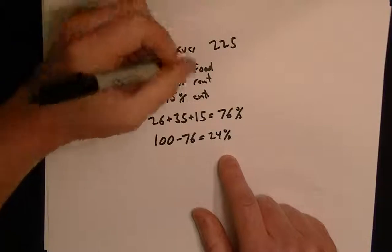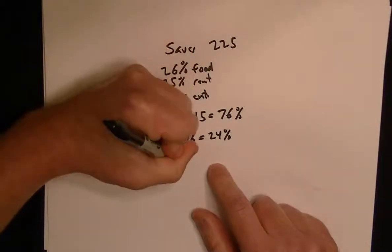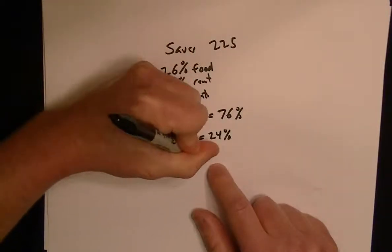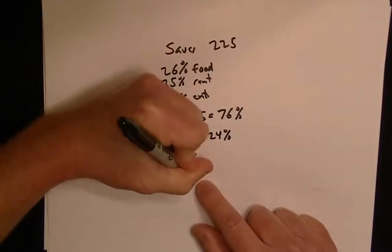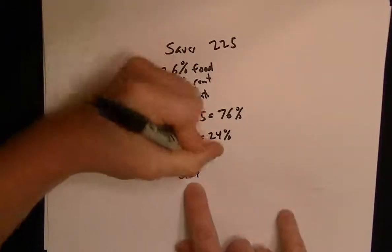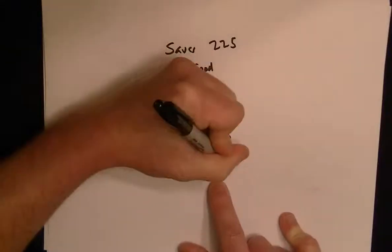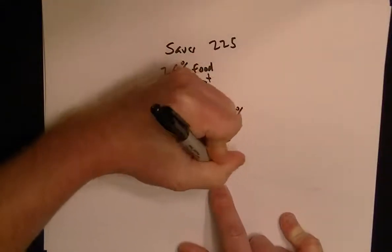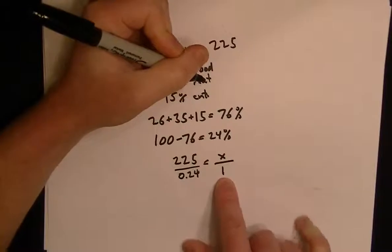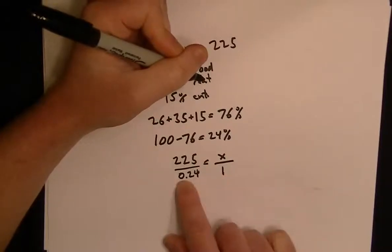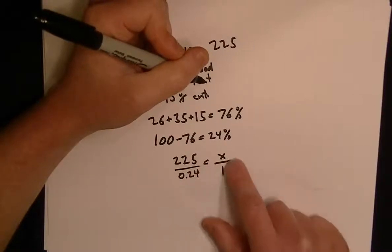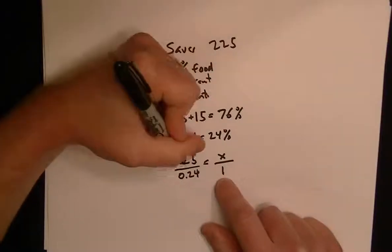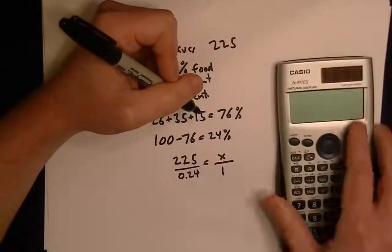So we can do this proportion here, where we have 225 is to 0.24, so I'm just putting that in decimal, is the same as the total amount is to 1. So that's 1 is the same as 100%, 0.24 is the same as 24%, so if we solve for x, this proportion will give us the answer.